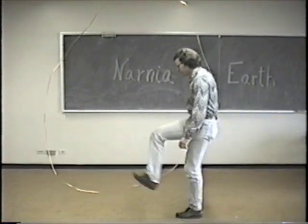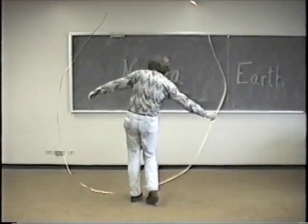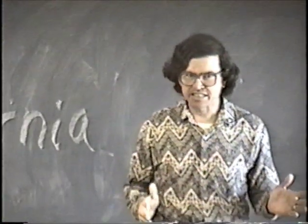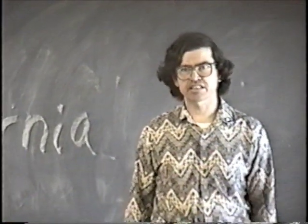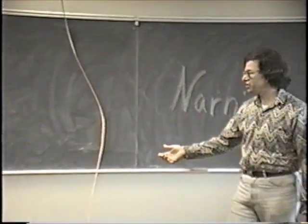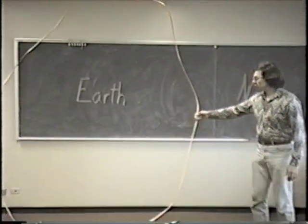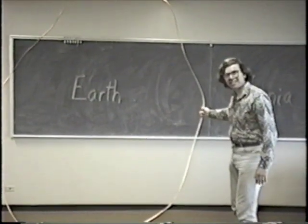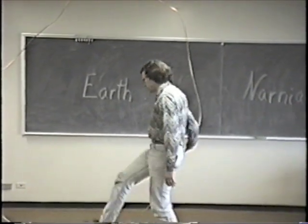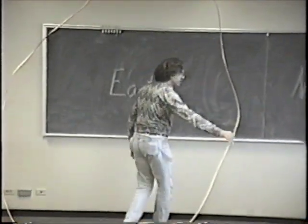I can step through this magical loop like a doorway into another world — the world of Narnia. Here we are in Narnia. We've been exploring, we've had lots of adventures and seen many unusual and interesting sites, but we've arrived finally back at this coil, this unknotted coil. When we look through it again, we see Earth. I'm tired of being in Narnia, so I'm going to step through the coil and I'm back on Earth again.